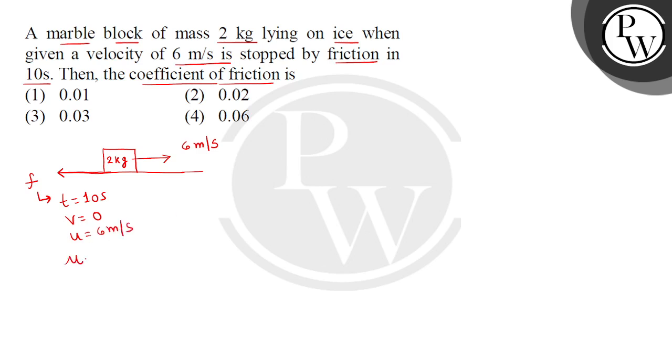So we have to find coefficient of friction, or mu's value. First of all, when we complete this free body diagram, then we can see that the gravitational weight, that is 2 times acceleration due to gravity, vertically downward and the normal reaction is vertically upward.